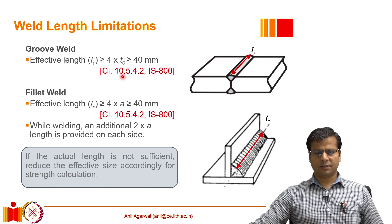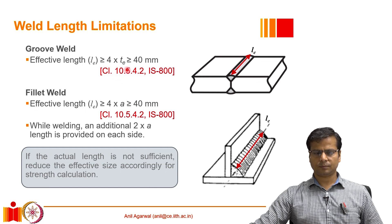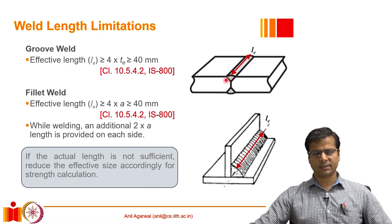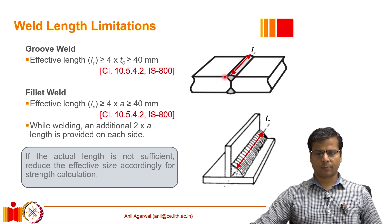The Indian code IS 800 prescribes that requirement in clause number 10.5.4.2. Also this dimension should not be less than 40 millimeters, so at least a 40 millimeter weld should be provided at a time. Any weld that is less than 40 millimeters is not qualified as a proper structural weld — it is only a tack weld.